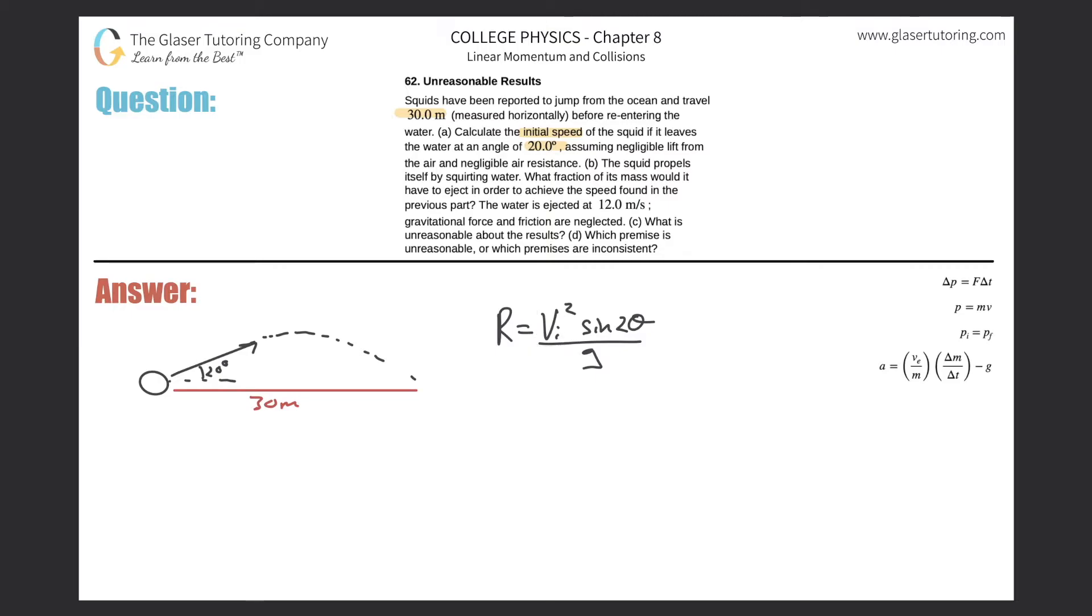Let's solve that algebraically. Bring the g on up, so it's R times g equals V_i squared sine of two times theta. Divide out the sine of two theta from both sides, so we get V_i squared equals Rg over sine of two theta. Now we got to get rid of the square, so we got to square root both sides. Square root that, square root that, and the squared term will drop. Here's my equation.